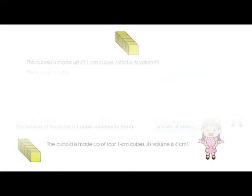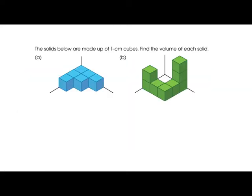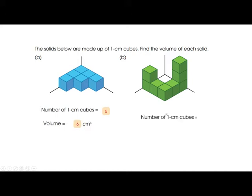The solid figures are made up of one centimeter cubes and you have to find the volume of each. For figure A, counting: one, two, three, four, five, six — the number of one centimeter cubes is six, so the volume of figure A is six cm³. For figure B, counting: one, two, three, four, five, six, seven, eight — the total is eight, so the volume of figure B is eight cm³.